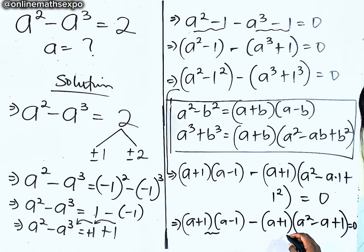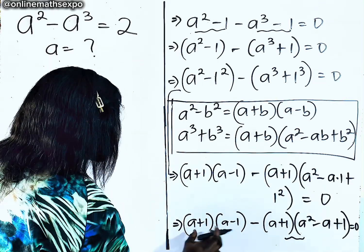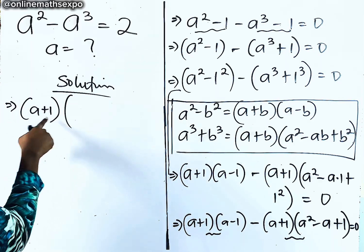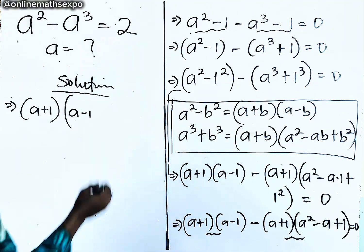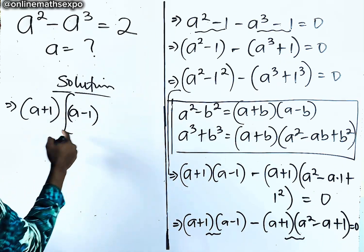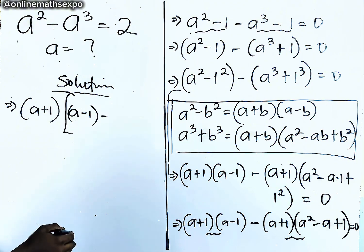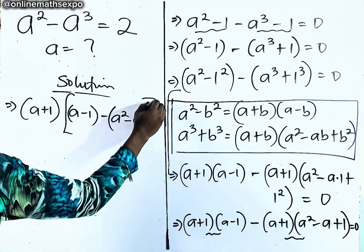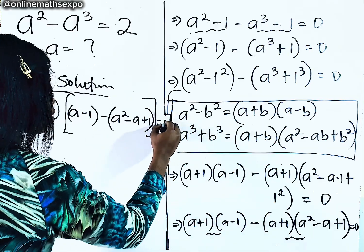Remember that these two terms are together, likewise these two. Now you observe that in these two parts A plus 1 is common. So we factor it out: A plus 1 into — when you divide the first group you are left with A minus 1. Then change the sign and divide the second group. You will be left with A squared minus A plus 1, and everything is equal to 0.